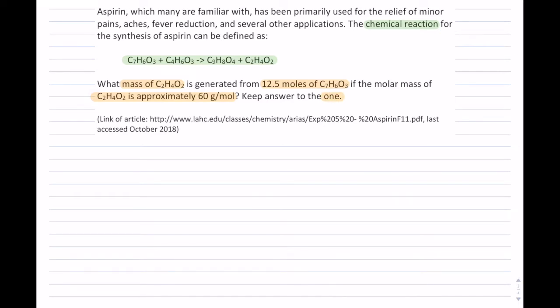Alright, so I am solving for mass, and let's now write all the givens. Whenever you are dealing with a chemical reaction problem, I like to write as my first given the chemical reaction itself. So that's going to be my first given here, so C₇H₆O₃, and so on.